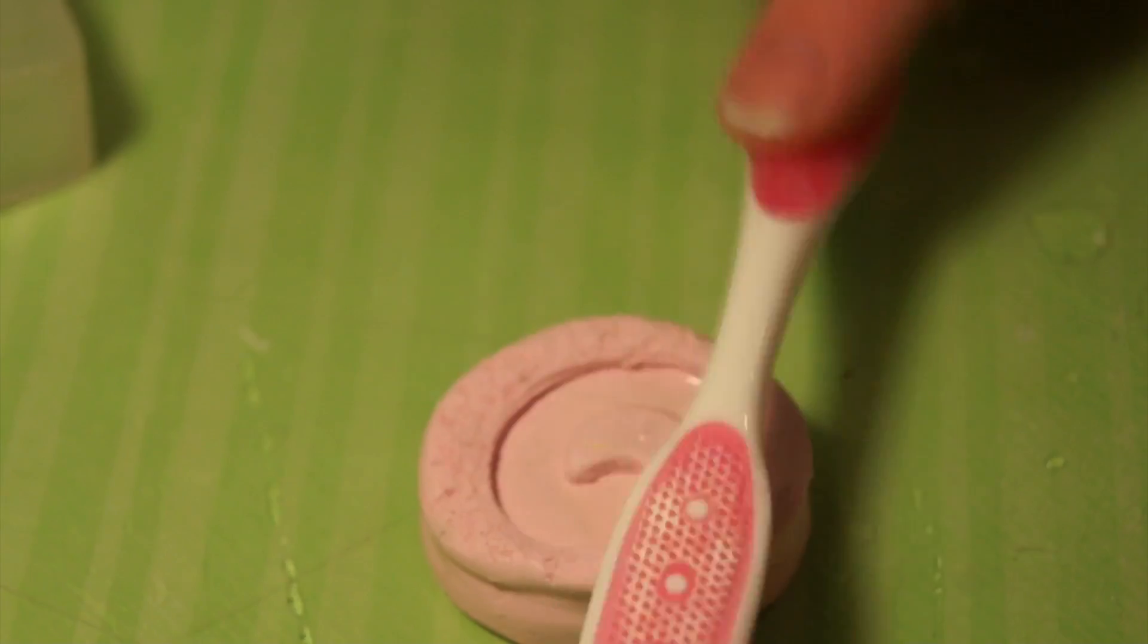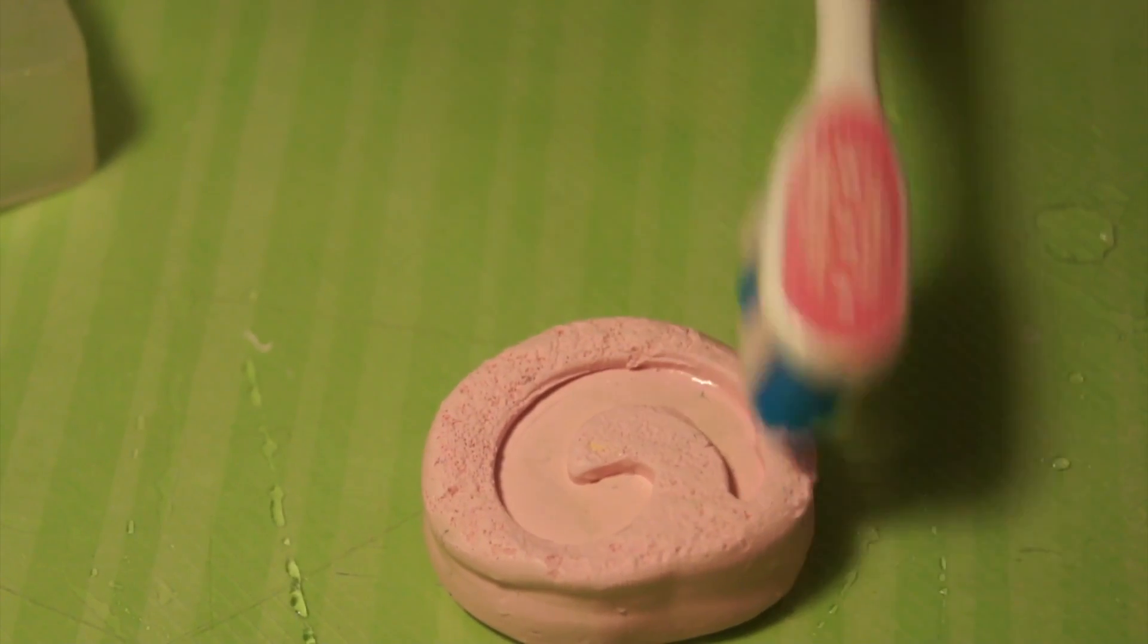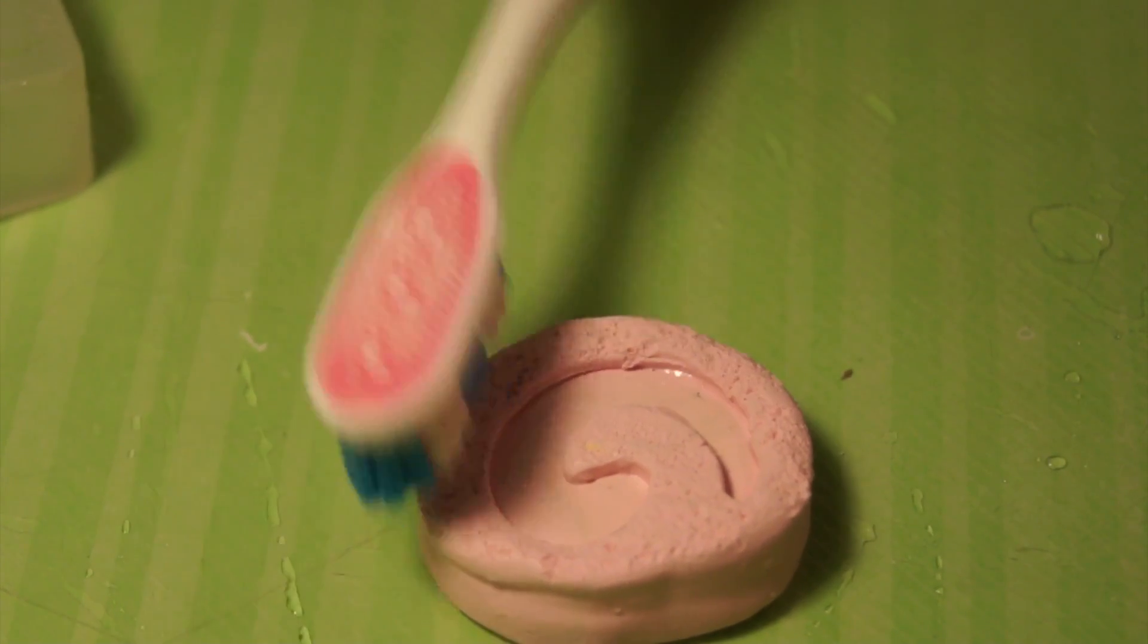Now on to the bunny. I'm just going to do the same thing using pink clay. This pink clay is by Sculpey and it's the softest clay I've ever worked with, so I'm just going to use a toothbrush because this clay is soft enough to allow me to texture it pretty well.